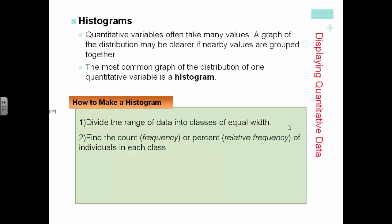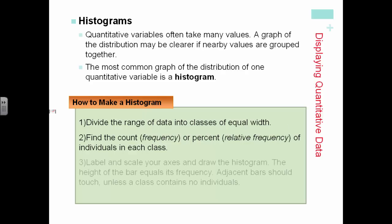Or what's called the relative frequency, which is percentage of individuals in each class. Then we label and scale the axis and draw the histogram. The height of the bar equals its frequency.